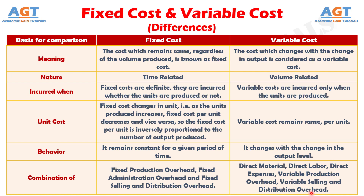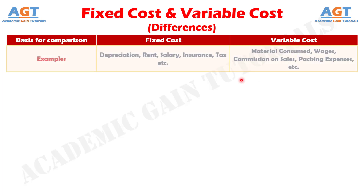And difference number seven: examples of fixed cost include depreciation, rent, salary, insurance, tax, etc., whereas examples of variable cost include material consumed, wages, commission on sales, packing expenses, etc.